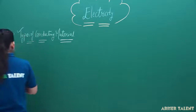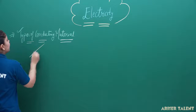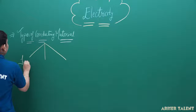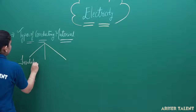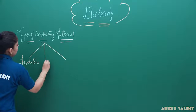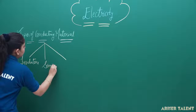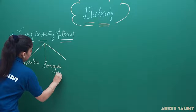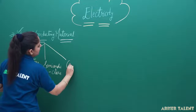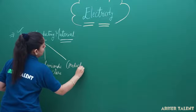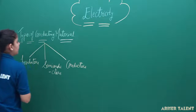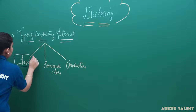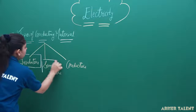These three types of conducting material are insulators, semiconductors, and conductors. We have these three categories of material based on the availability of free electrons.